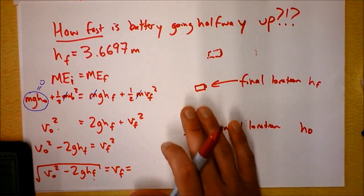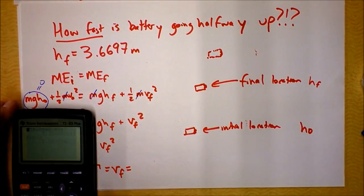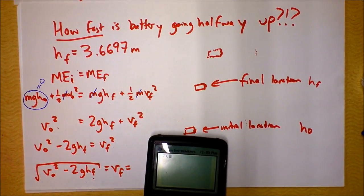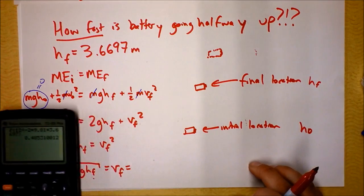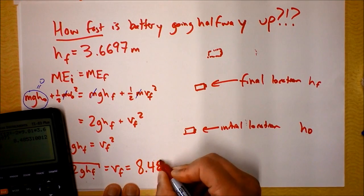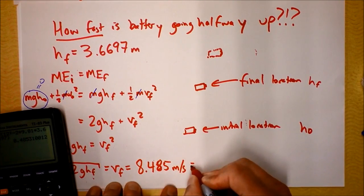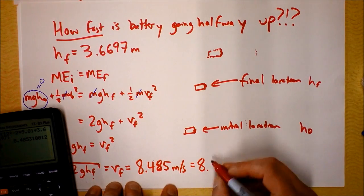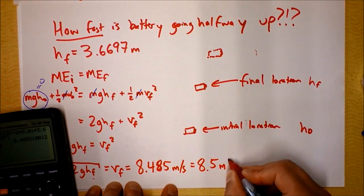You don't think that it's six meters per second, do you? Do you think it's more than six meters per second or less? Let's do it. We're going to take the square root, 12 meters per second squared, then I'm going to subtract 2 times 9.81 and then I'm also going to multiply by 3.6697. Looks like it's going 8.485 meters per second. If we're going to do significant figures, 8.5 meters per second is how fast it's going.